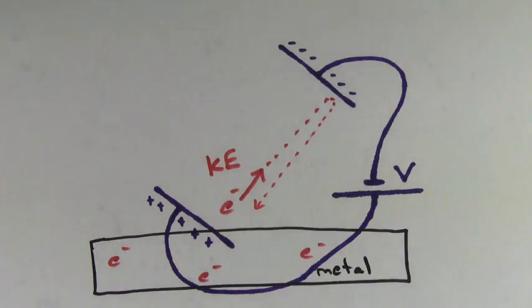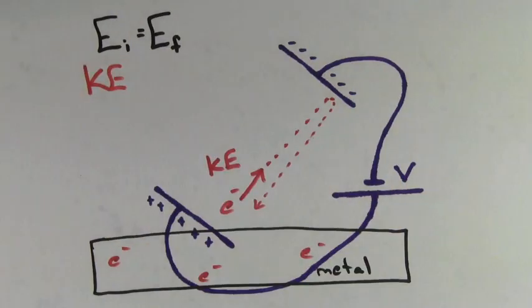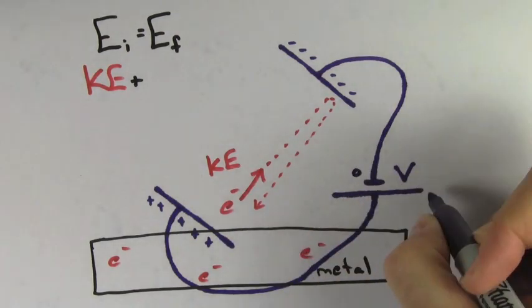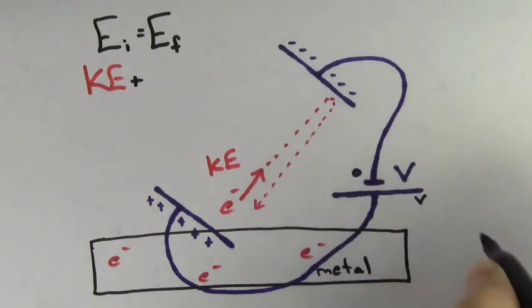This minimum voltage required to stop the electrons is called the stopping potential. Using conservation of energy, the electron starts off with kinetic energy. To find out how much electric potential energy the electron starts with, let's assume that the negative terminal of the battery is at zero electric potential. That means the positive terminal of the battery is at electric potential V.